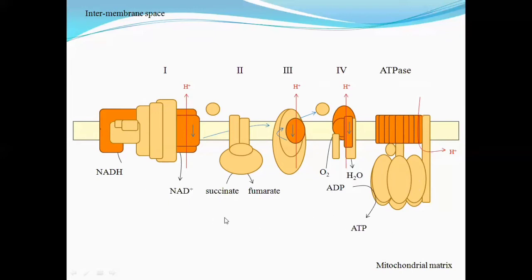These two processes occur simultaneously. The four complexes make up the electron transport chain, and the end product of the electron transport chain is the water molecule. As a result of electron transfer, energy is released, which pumps hydrogen ions from the mitochondrial matrix into the intermembrane space. These protons accumulate in the intermembrane space and are transported back into the matrix only through ATP synthase.